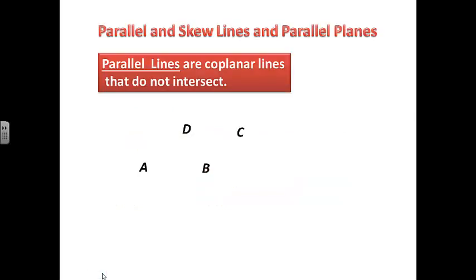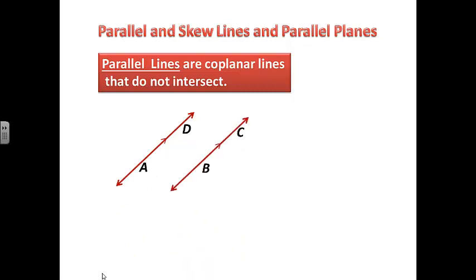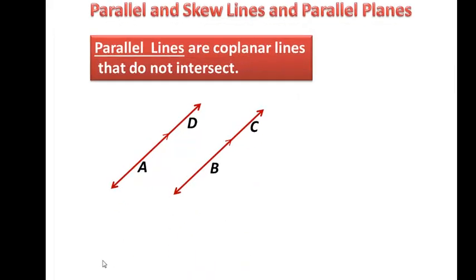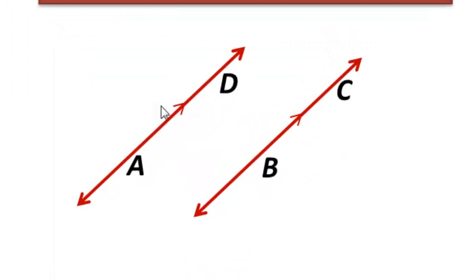Let's start with parallel lines. Parallel lines are coplanar lines that do not intersect. Line AD is parallel to line CB — take note of this arrow on this line and this arrow on this line over here.